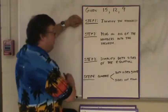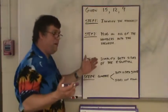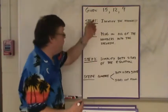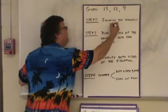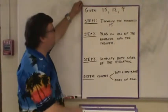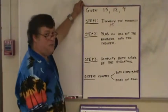Which in this case, the hypotenuse, in every case, the hypotenuse is always the largest side, so it's always going to be the largest number. So it would be 15. Step two, plug in all of the numbers into the theorem.